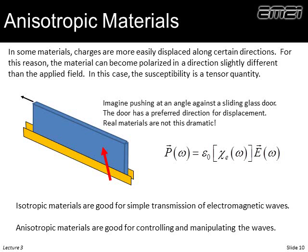To account for this, recall that polarization equals susceptibility times the electric field (with the free-space permittivity). Since polarization can be in a different direction than the electric field, the susceptibility becomes a tensor — a three-by-three matrix, since there are three vector components in E and three in P. A tensor generalizes a scalar: multiplying a vector by a scalar only changes its magnitude, but multiplying by a tensor can change both magnitude and direction. In anisotropic materials, susceptibility, dielectric constant, permittivity, permeability, and even conductivity all become tensor quantities.